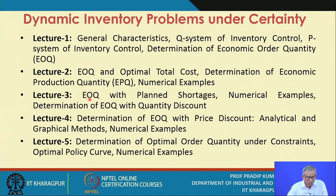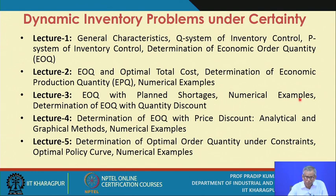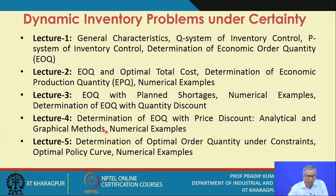In the third lecture session, we will discuss a specific model called EOQ with planned shortages. There are situations where shortages can be planned for certain kinds of items, and we will discuss this model with numerical examples. We will also cover how to determine EOQ with quantity discount. During the fourth lecture session, we will continue our discussion on determination of EOQ with price discount, covering several issues using both analytical and graphical methods, along with numerical examples.